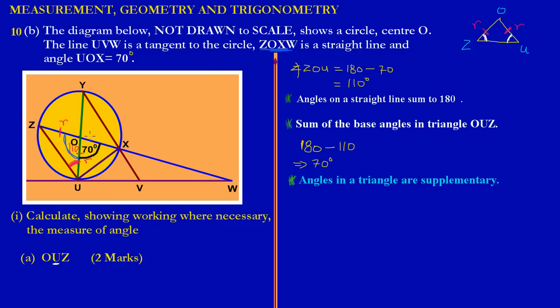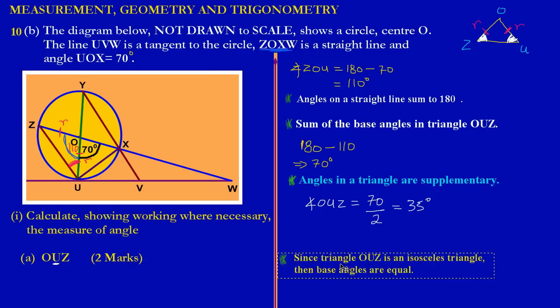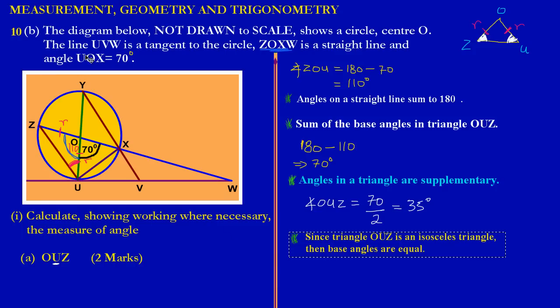The final part is to get angle OUV. Since the sum of the base angles adds up to 70 degrees, and both angles are equal, the angle they're asking us to find, which is OUV, must equal 70 divided by 2. That equals 35 degrees. Our final geometric reason is: since triangle OUZ is an isosceles triangle, the base angles are equal. That's 2 marks.